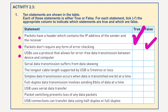USBs use a protocol that allows for error-free data transmission between device and computer. That is true. Serial data transmission suffers from data skewing — no, it doesn't. Only in parallel data transmission do we get skewing, where the bits of data may arrive at different times.